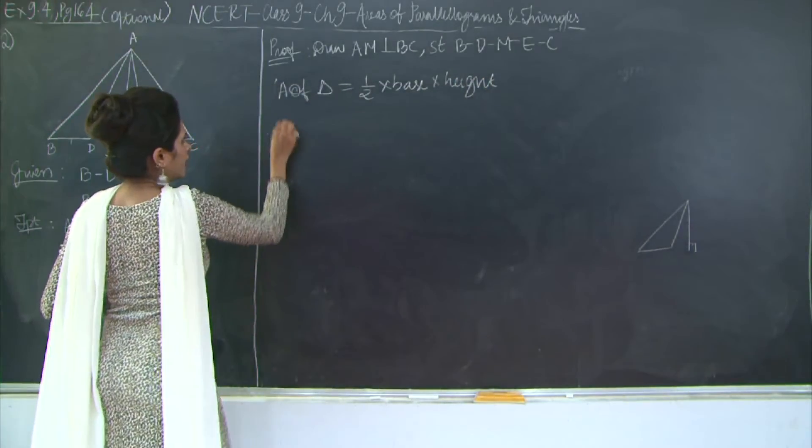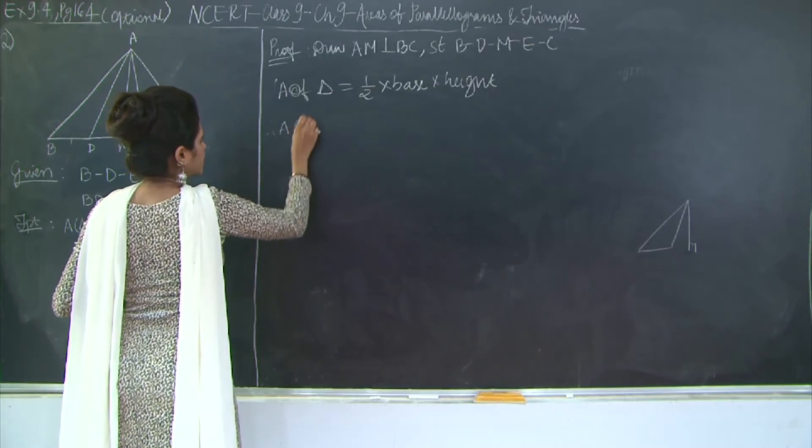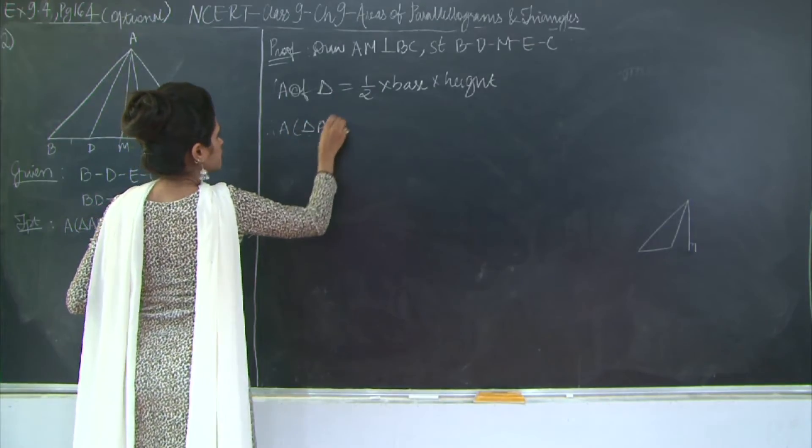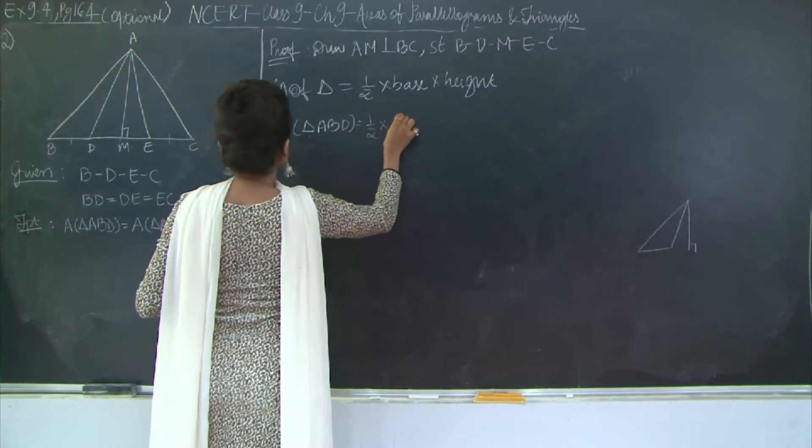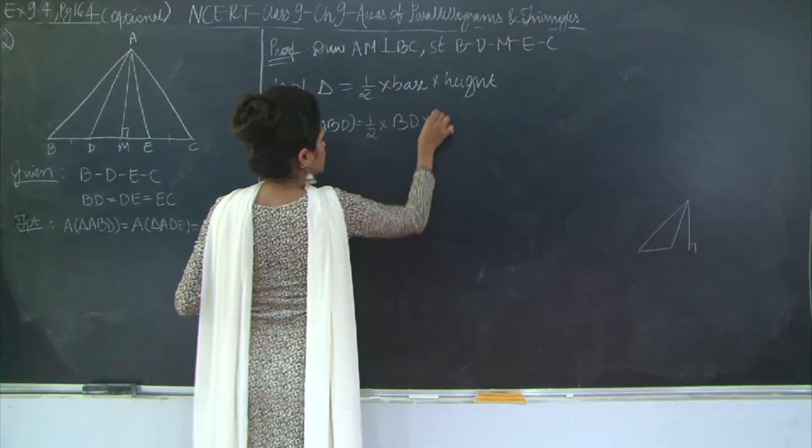Therefore area of triangle ABD is equal to half into base which is BD into height which is AM.